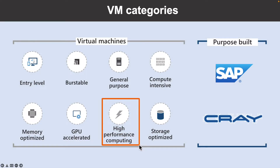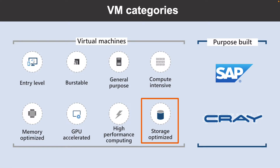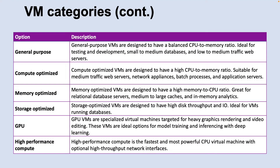The seventh type is high performance computing. These virtual machines offer the fastest and most powerful CPUs with optional high-throughput network interfaces. The last type is storage optimized, offering high disk throughput and IO — ideal for big data, SQL, NoSQL databases, data warehousing, and large transactional databases. Rather than specifying processing power, memory, and storage capacity independently, Azure provides different virtual machine sizes that offer variations of these characteristics, so consider the type of workload your VM needs to run.